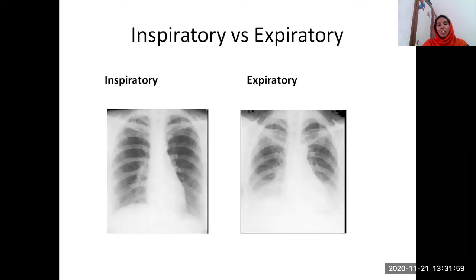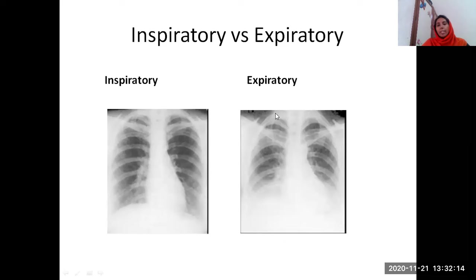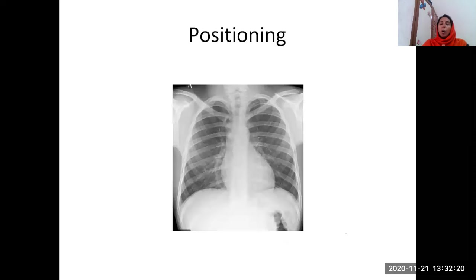We need to know whether it is inspiratory or expiratory. If you see the anterior ends of the ribs, around six to seven ribs will be touching the diaphragm in case of an inspiratory view, whereas in an expiratory view around three to four ribs only will be touching the diaphragm. For positioning, we need to see that the medial ends of the clavicles are equidistant from the center, and the anterior ends of the ribs are also equidistant from the center — indicating a correctly positioned x-ray.